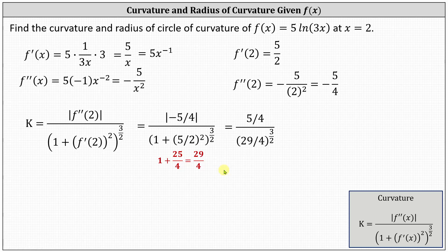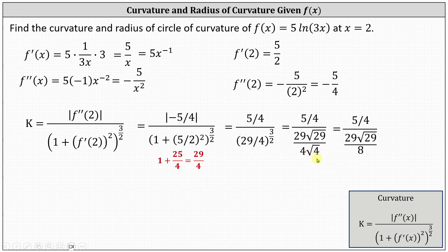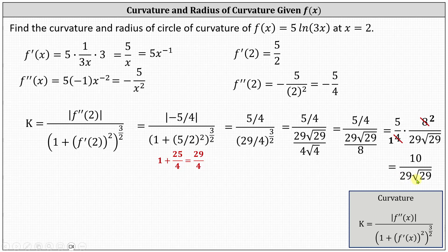Because three halves equals one plus one half, we can write 29 to the three halves power as 29 times square root of 29. And we can write four to the three halves as four times square root of four. Square root of four equals two, so four times square root of four equals eight. Dividing by a fraction is equivalent to multiplying by the reciprocal, so we write this as five fourths times eight over 29 square root 29. There is a common factor of four between four and eight, so multiplying, we have the curvature equals 10 divided by 29 square root 29.